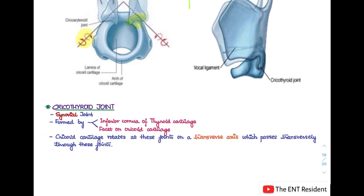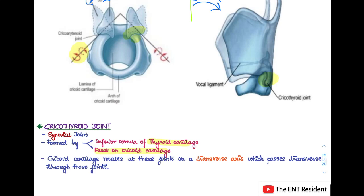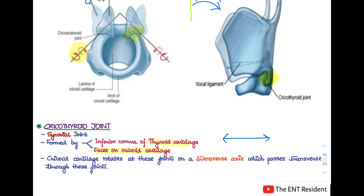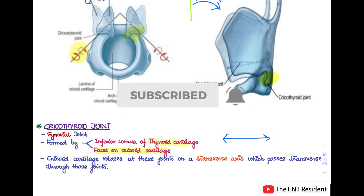The cricothyroid joint is also a synovial joint, formed between the inferior cornu of the thyroid cartilage and the facet on the cricoid cartilage. The cricoid cartilage rotates at these joints around a transverse axis passing through both joints — there is only one kind of movement at this joint. This concludes today's session covering laryngeal cartilages, ligaments, membranes, and joints of the larynx. Thank you for watching; please leave questions in the comments, subscribe, and share the video.